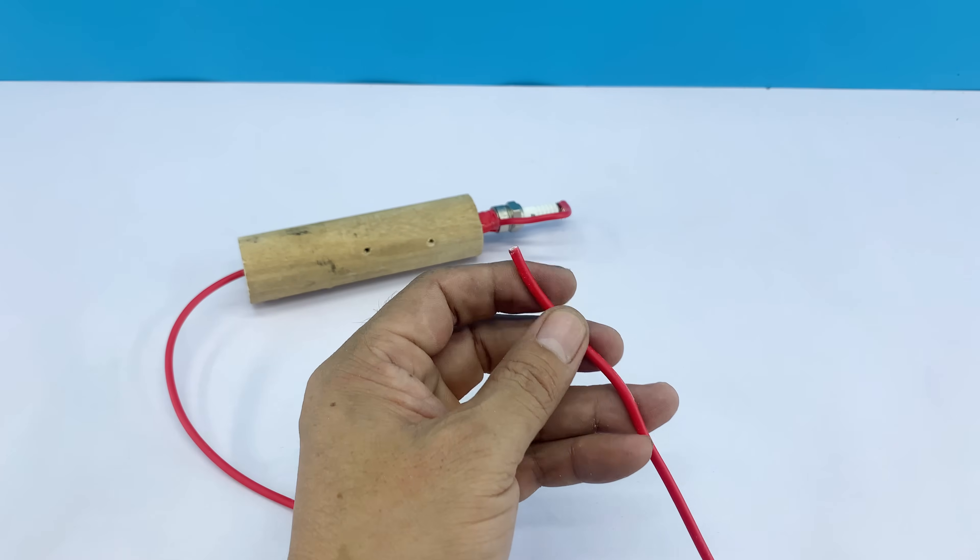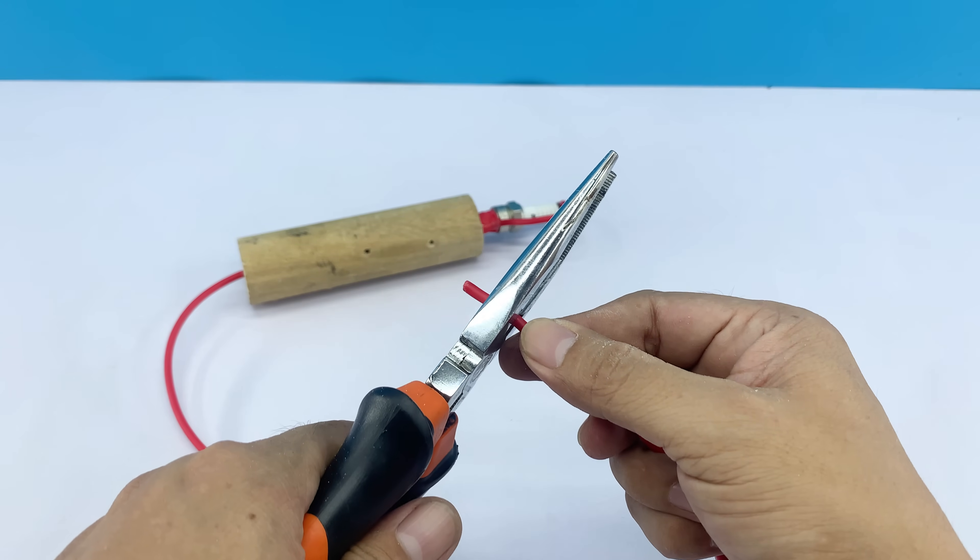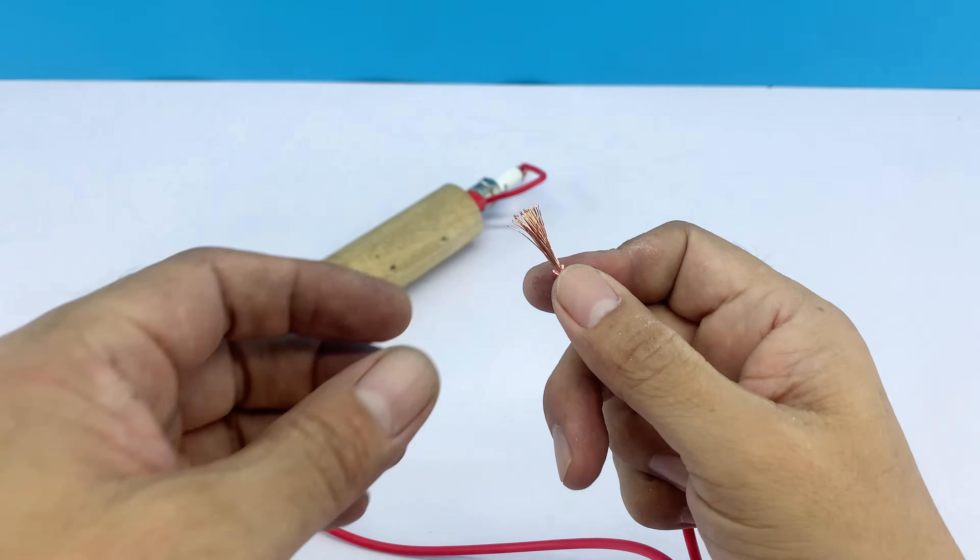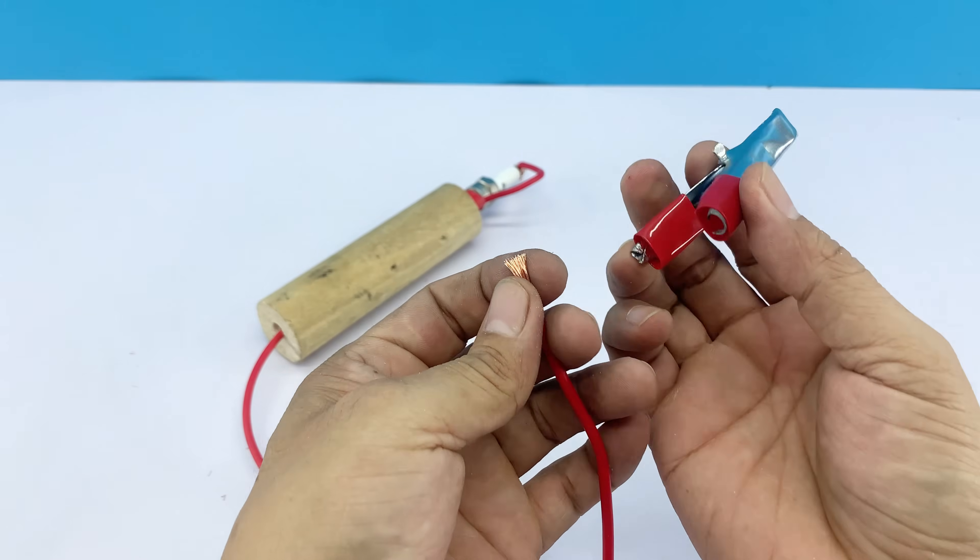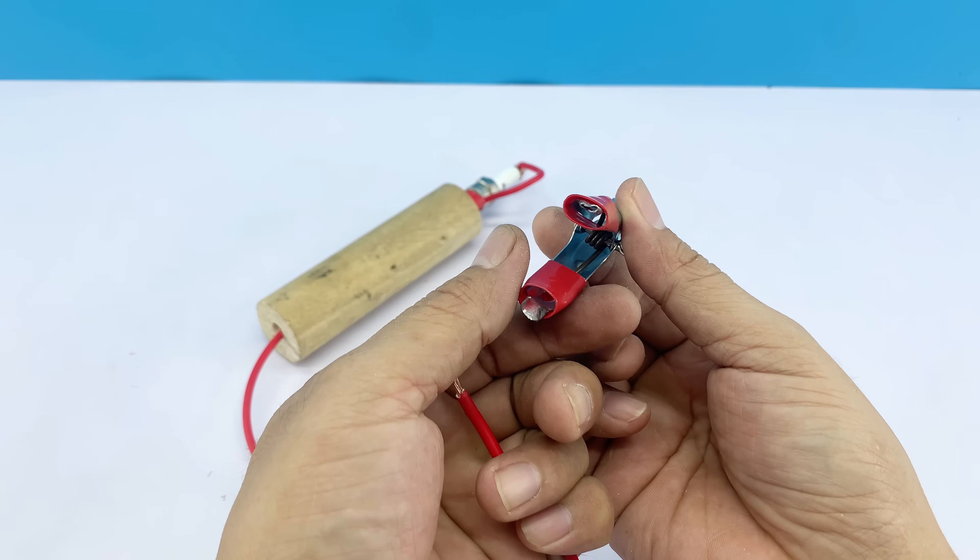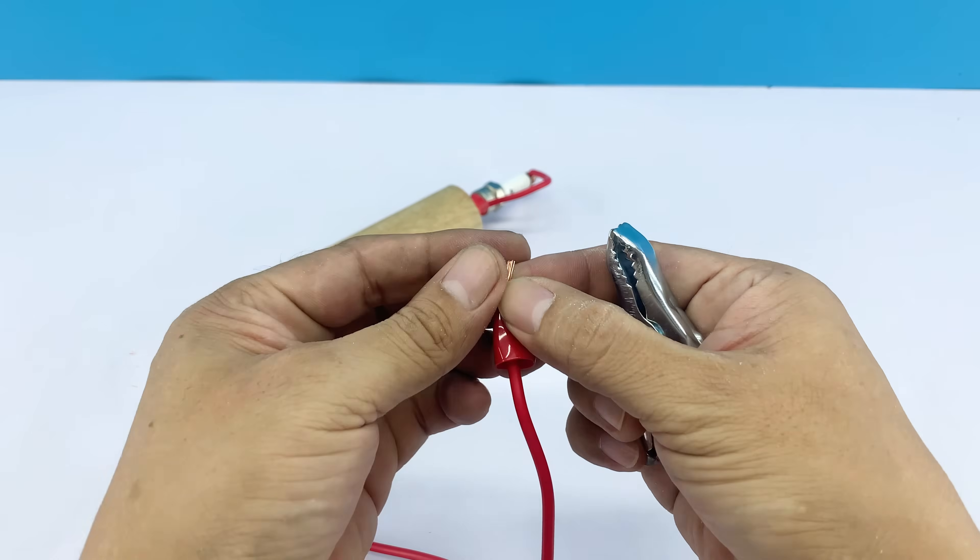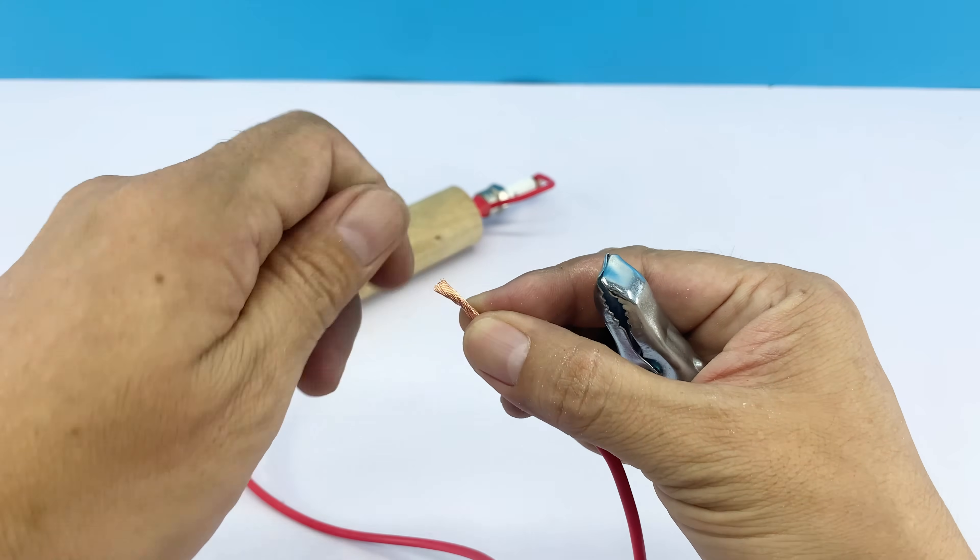The next step is to connect the other end of the wire to an alligator clip. So this is an alligator clip. If you're new, remember its shape. It'll be really helpful when you go shopping, as you can accurately describe its appearance and purpose to the store staff.